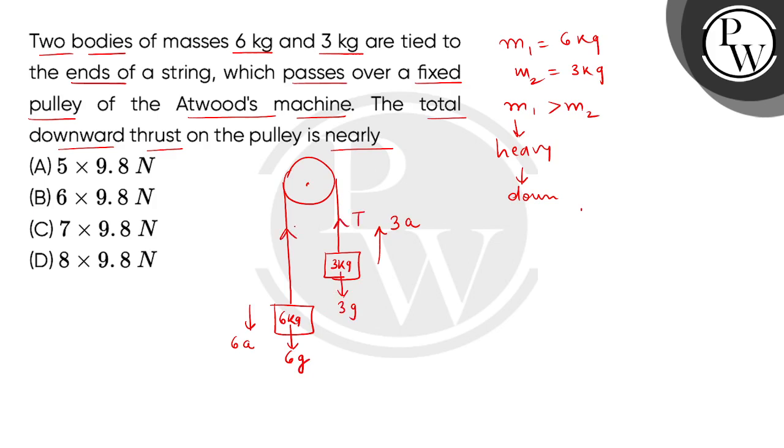Tension in the string will be acting towards the support. First of all, let's draw the force balance equation for the 6 kg mass. This equation will be 6A equals to 6G minus T. This is equation number 1.